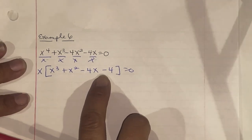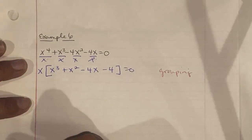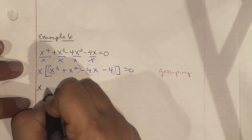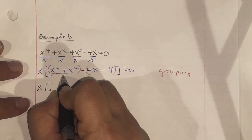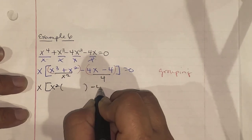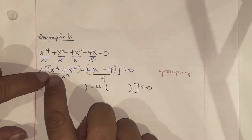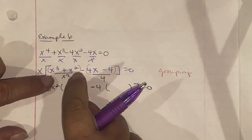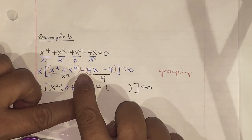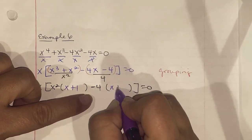Now we have four terms inside the parentheses, which calls for grouping. We group the first two terms and the last two terms. The first group shares x² and the second group shares 4. Factoring out the GCF from each group: x² comes out of the first giving (x + 1), and negative 4 comes out of the second — negative 4x ÷ negative 4 = x, and negative 4 ÷ negative 4 = positive 1 — also giving (x + 1).